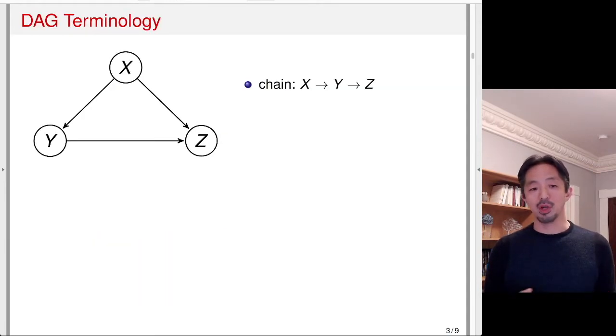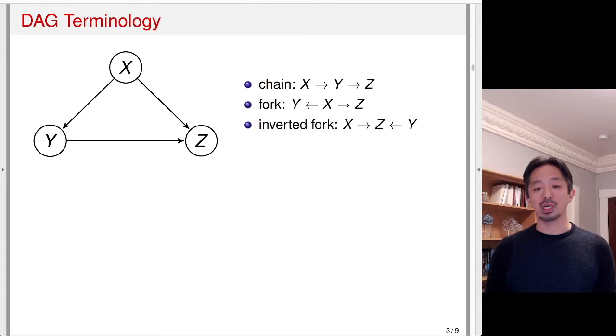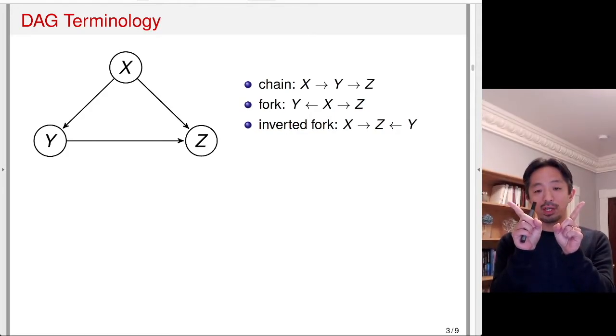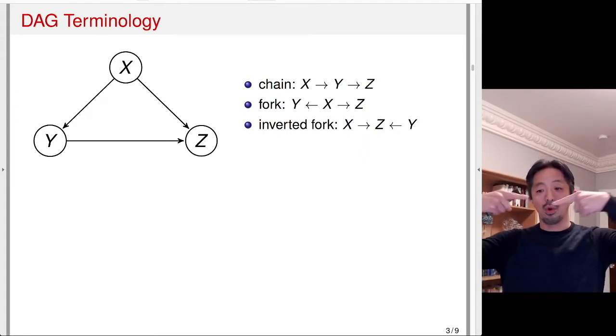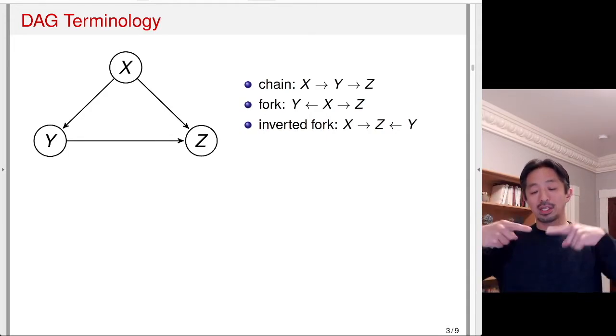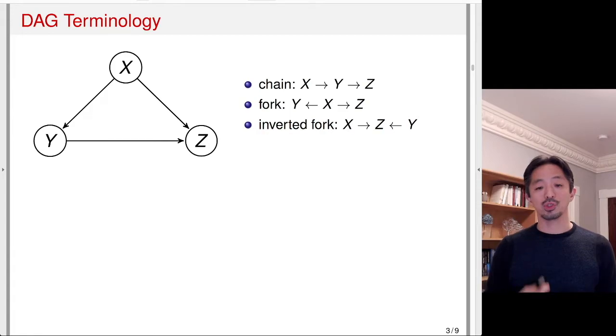Now DAG has a lot of terminology. Let's go through each one of them. There are three types of arrow relationships: chain, fork, and inverted fork. It's sort of self-explanatory. The chain has a one-directional causal effect going from X to Y to Z, for example. Fork is causal direction going from one node to two other nodes. And the inverted fork is the other way, X and Y affecting Z directly. There are three types of arrow relationships that you can find in any DAG.